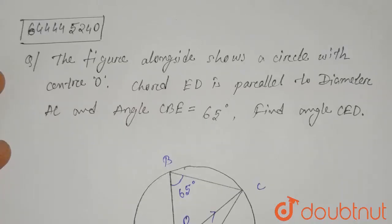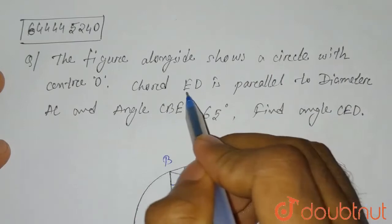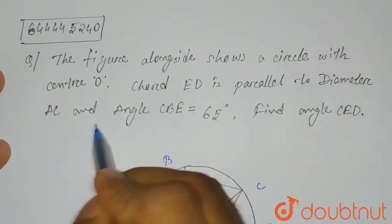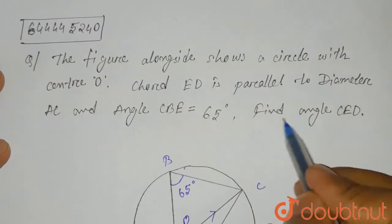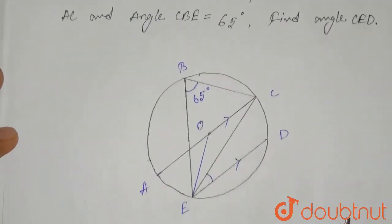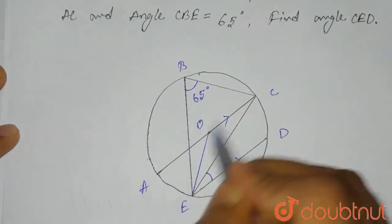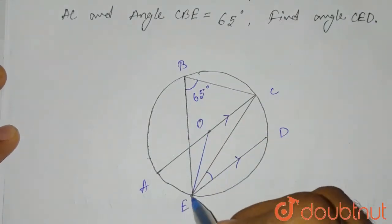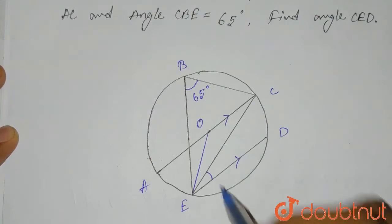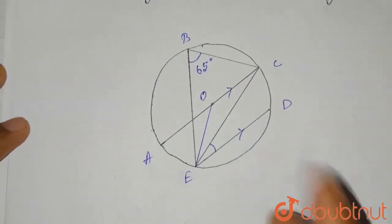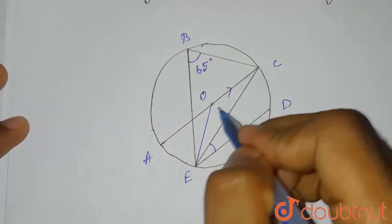Hello everyone. The question is: the figure alongside shows a circle with center O. ED is parallel to diameter AC. Angle CBE is equal to 65 degrees. Find angle CED. Here is a circle where angle CBE is 65 degrees, AC is the diameter, AC parallel to ED, and we have to find angle CED.